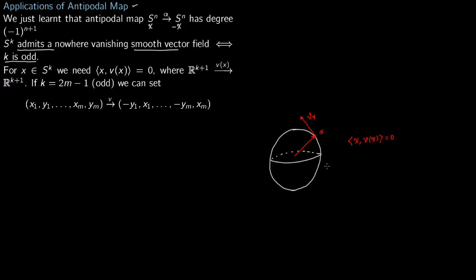If this sphere is S^k then we are working in R^(k+1), since each point on S^2 has 3 coordinates, and generally k+1 coordinates. So this vector field goes from R^(k+1) to R^(k+1). In particular if k is odd, say k equals 2m minus 1, the vector field goes from R^(2m) to R^(2m), and we can define it explicitly and verify the dot product is zero.